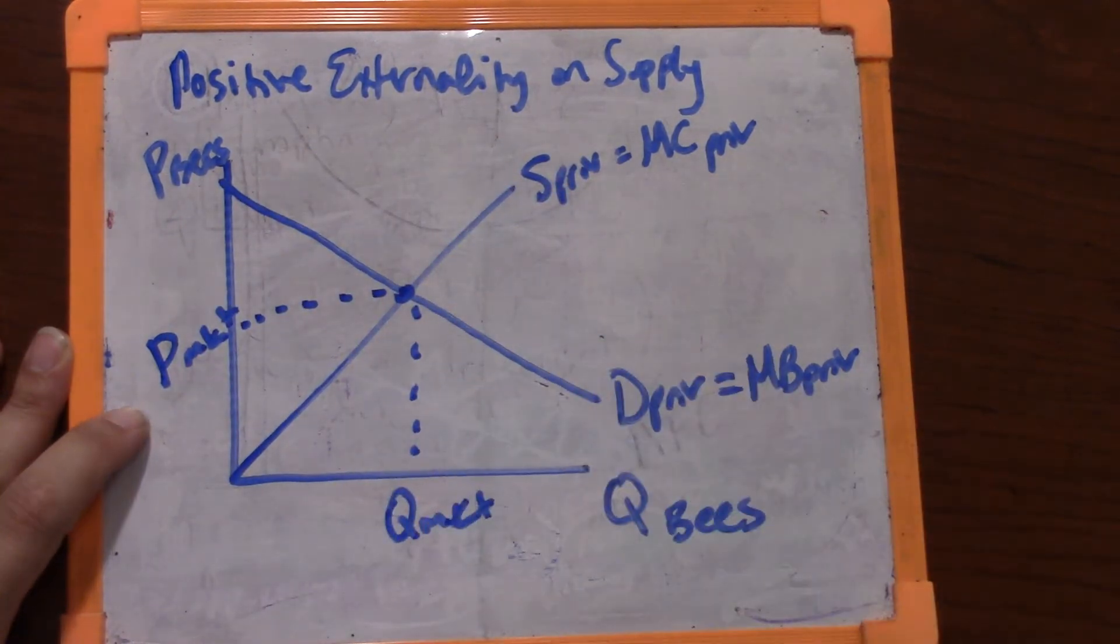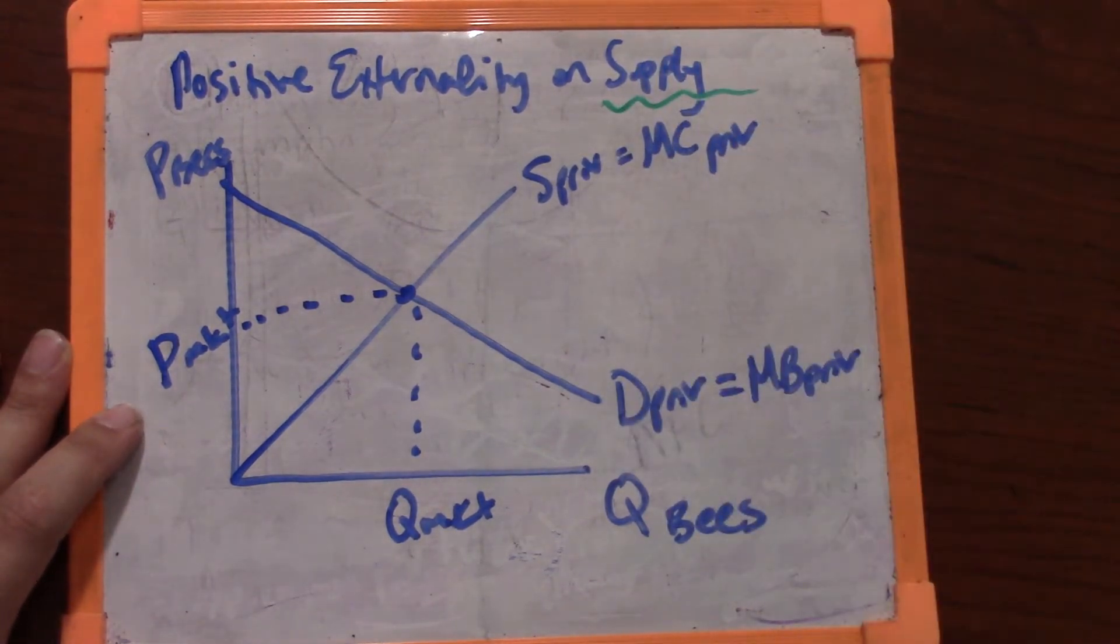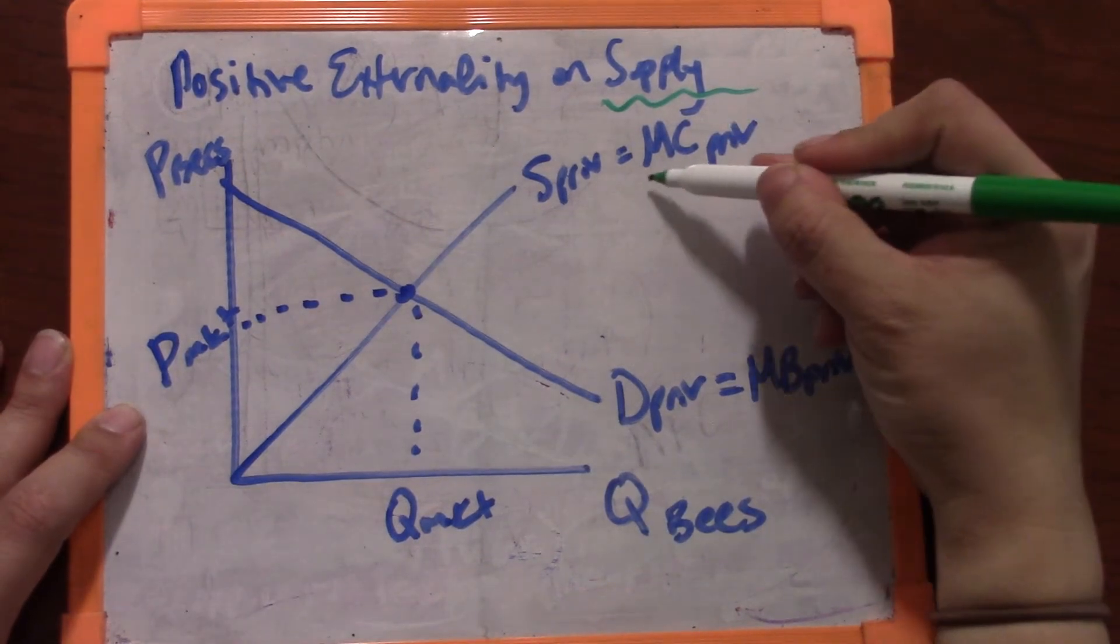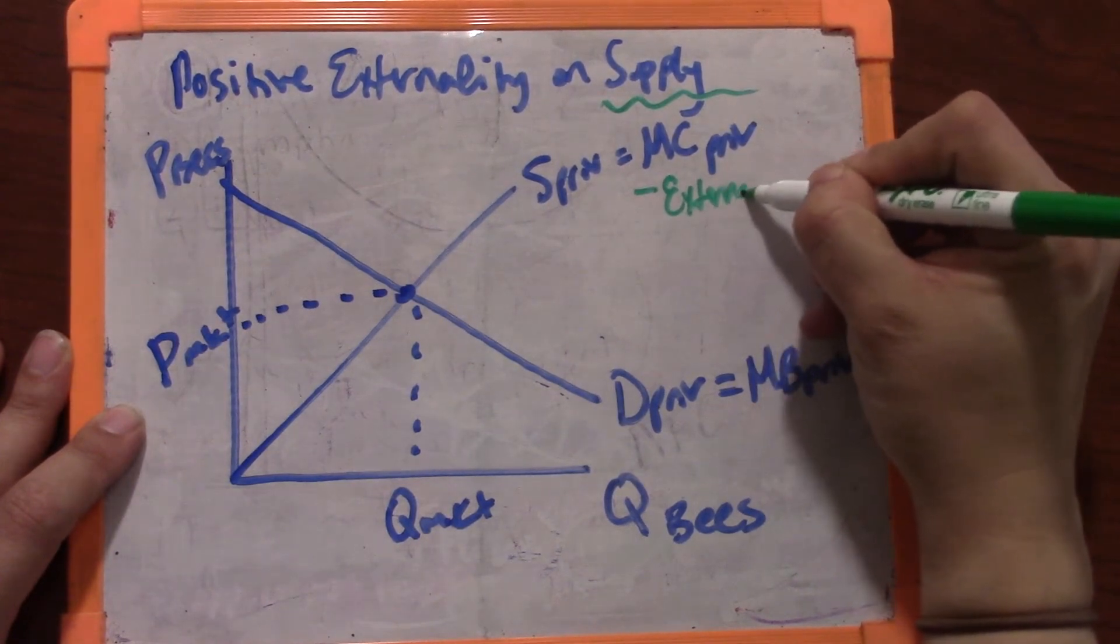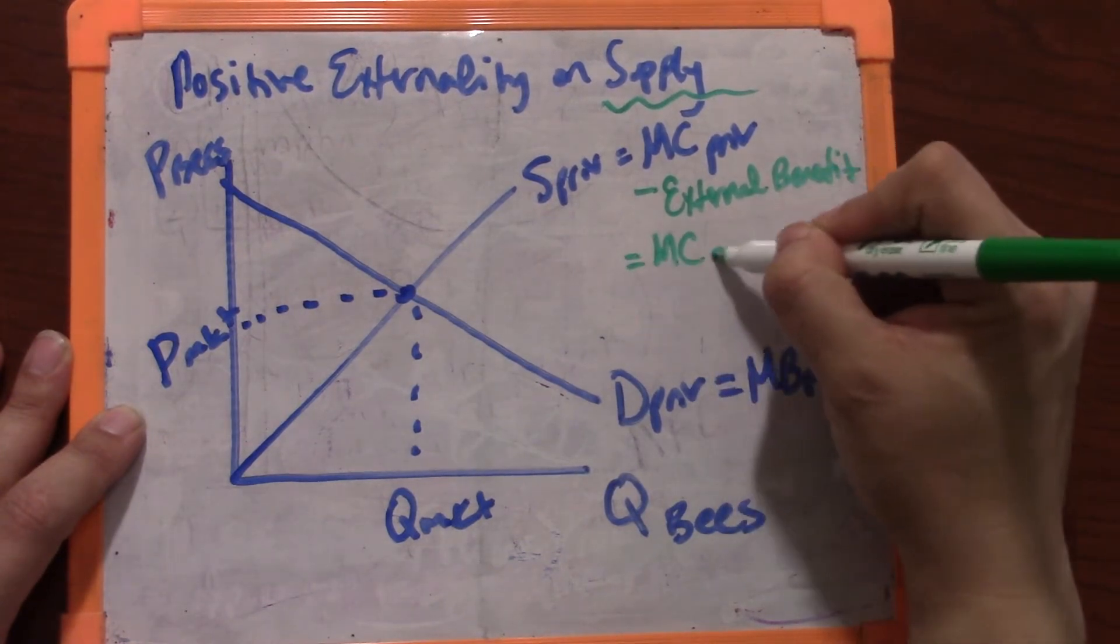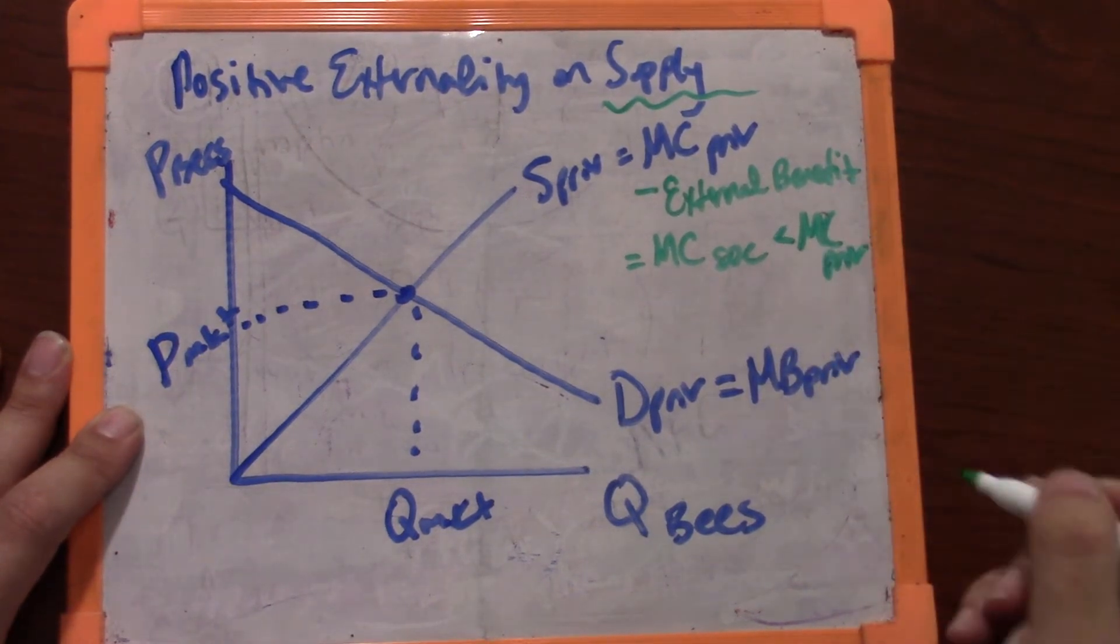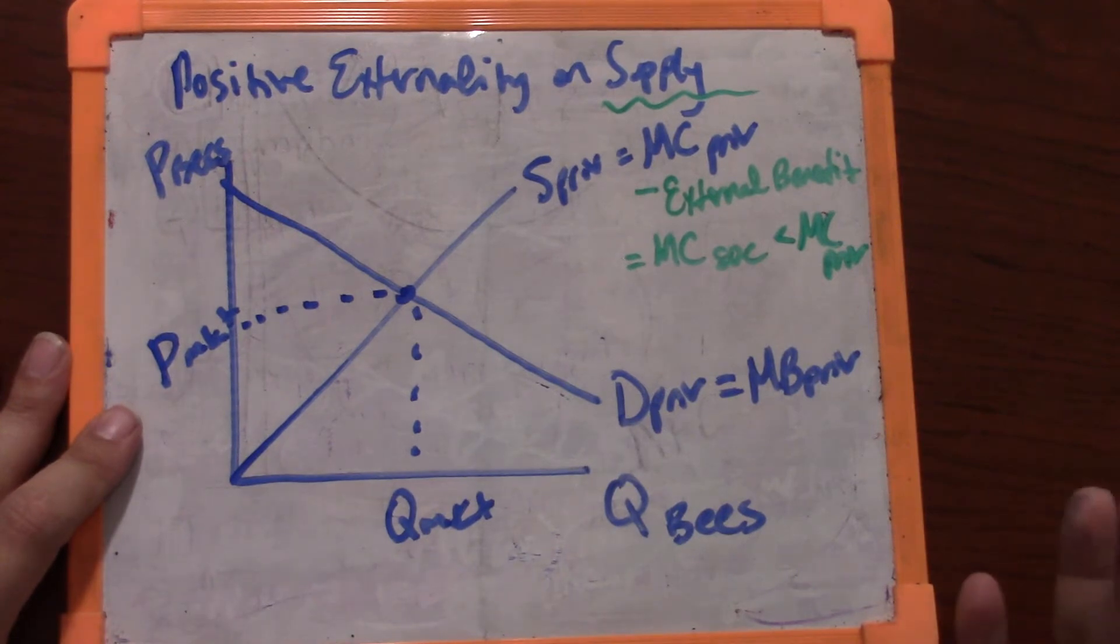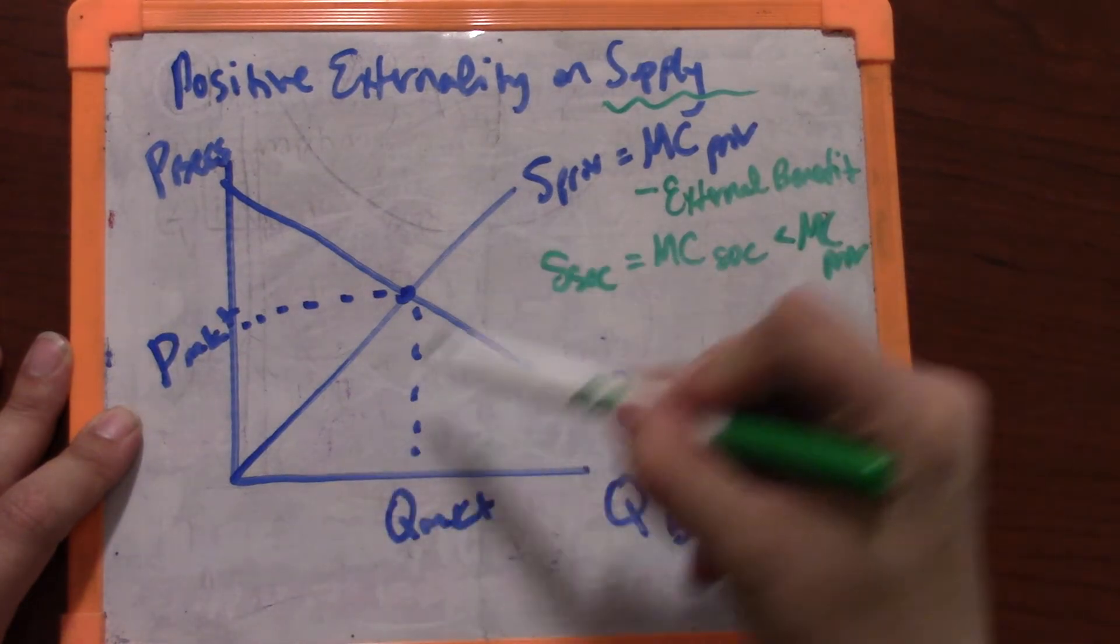But we believe that bees have a positive external benefit to people not involved in the supply of beekeeping. So that means that this marginal cost needs to be lowered by the amount of the external benefit, and that will give us the marginal cost to society. It's going to be lower than the marginal cost to the private individual because of this positive external benefit. So that will be reflected in the social supply.